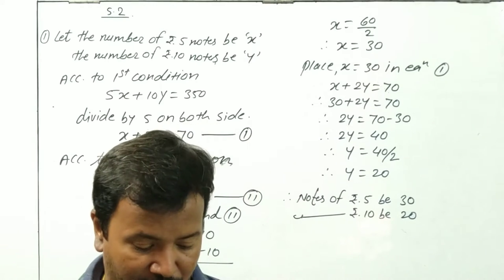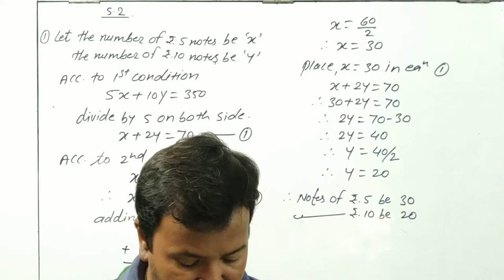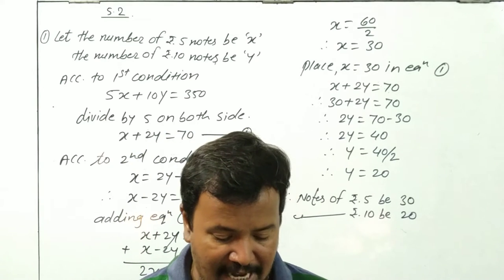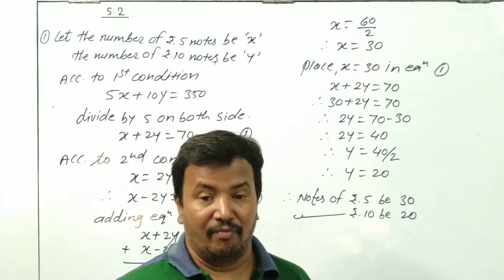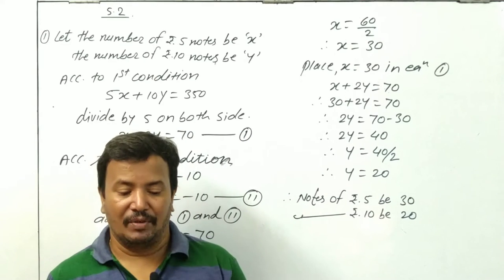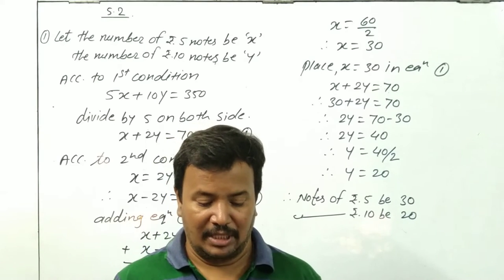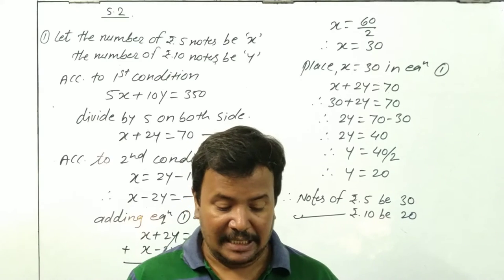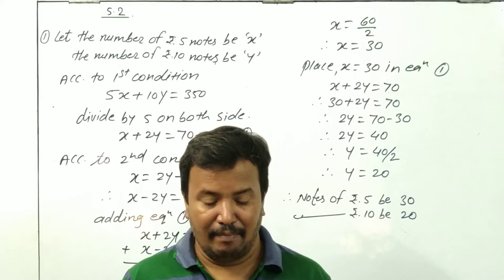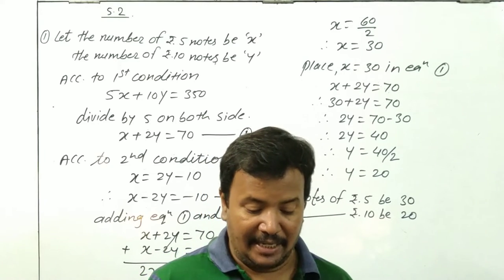Students, now we are going to start Exercise 5.2. The first sum: in an envelope there are some 5 rupees notes and some 10 rupees notes. Total amount of these notes together is 350 rupees. Number of 5 rupees notes are less by 10 than twice the number of 10 rupee notes. Find the number of 5 rupees and 10 rupees notes.